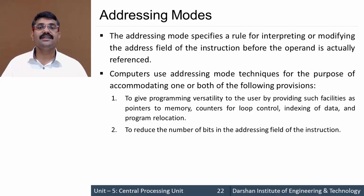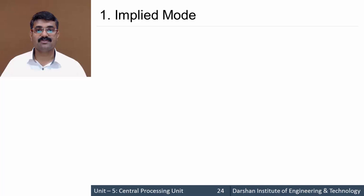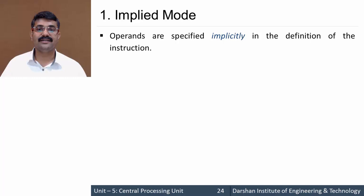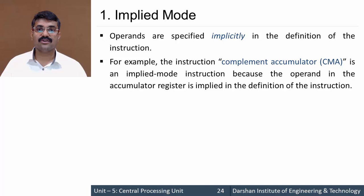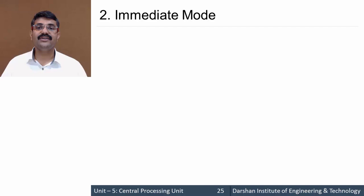We have 10 addressing modes supported by our basic computer. Starting with the first mode: implied mode. The word is self-explanatory — implied means the operand of the instruction is implicitly there in the instruction. For example, the CMA instruction (complement accumulator) — in that instruction the accumulator register is implied. So implied mode contains the operand as a register in itself; we are not supposed to explicitly specify the operand.